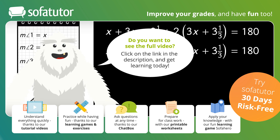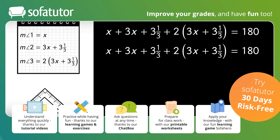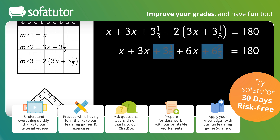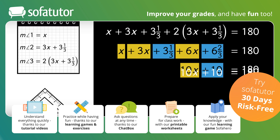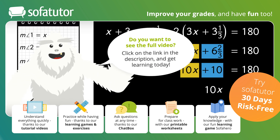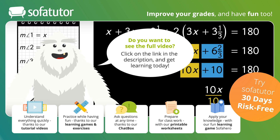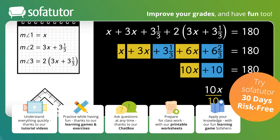To solve for x, first use the distributive property by multiplying 2 by 3x and 2 by 3 and 1 third. Combine the like terms, and then use opposite operations to isolate x. Use the opposite operation of subtraction to undo the addition by 10, then divide both sides by 10 to finish isolating x, giving us x equals 17.